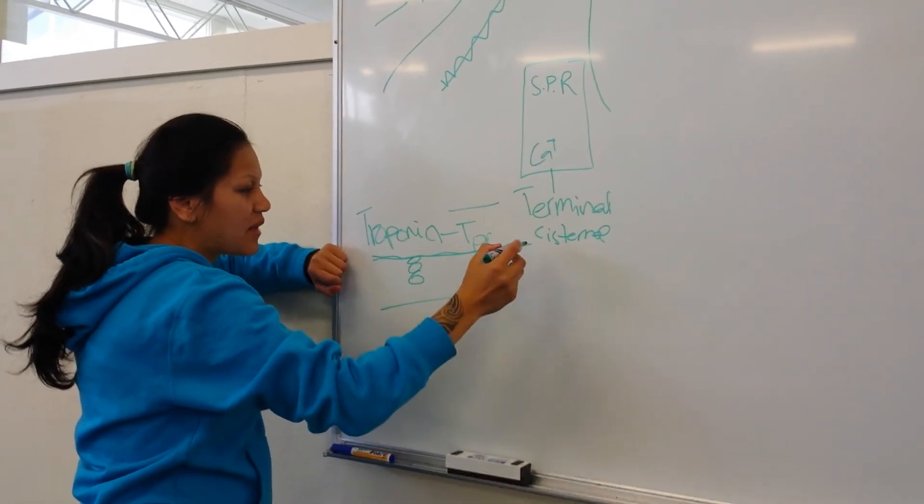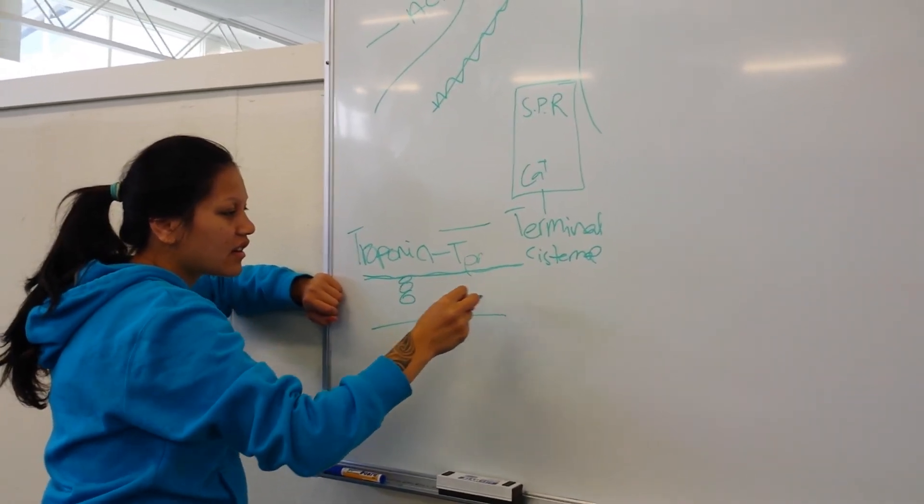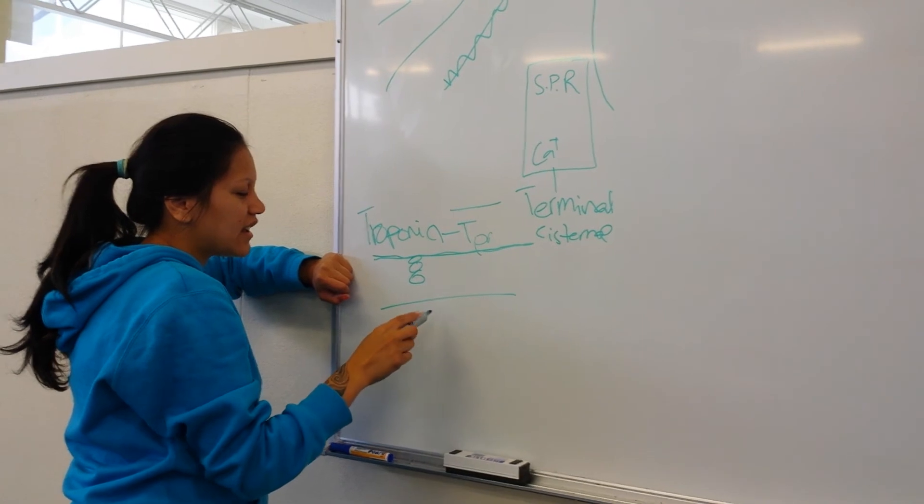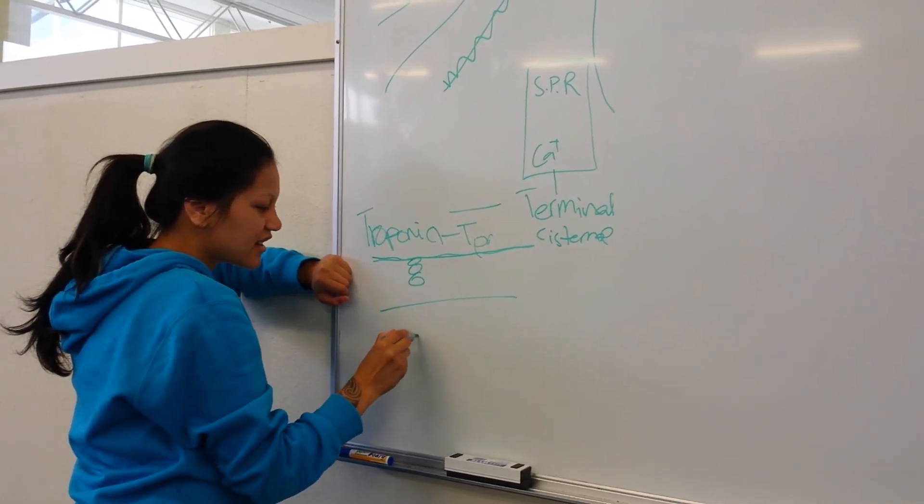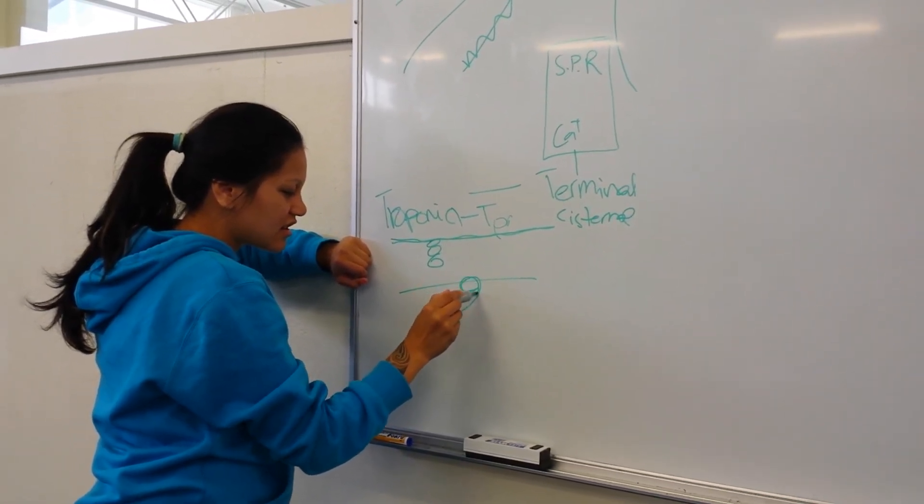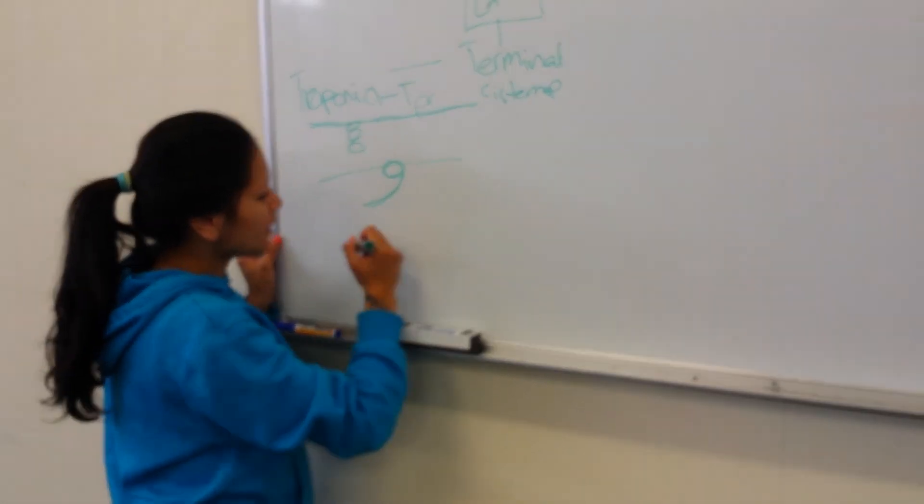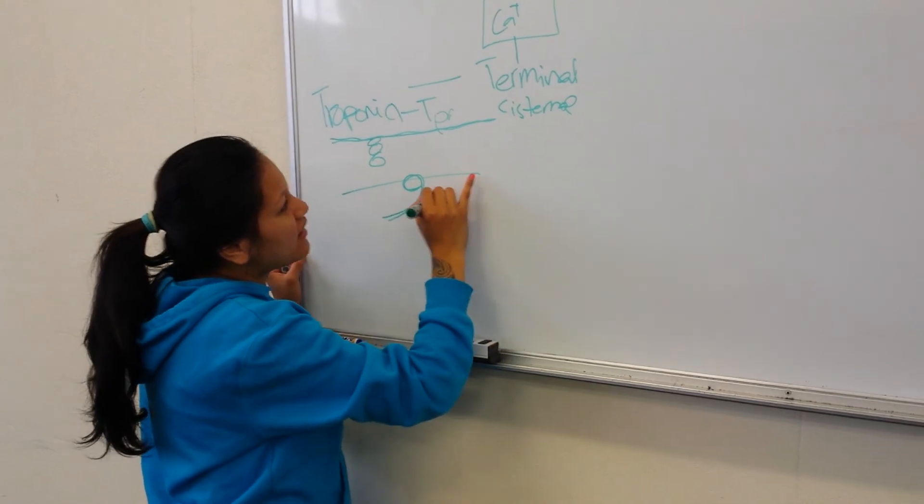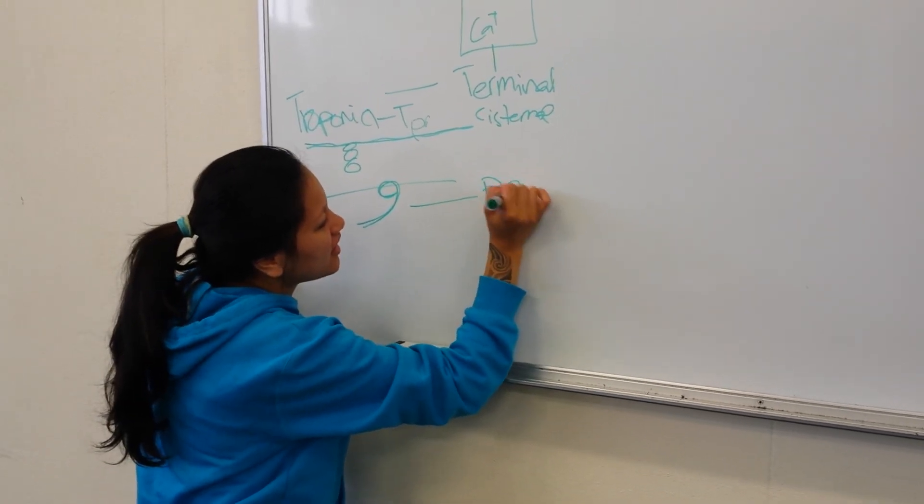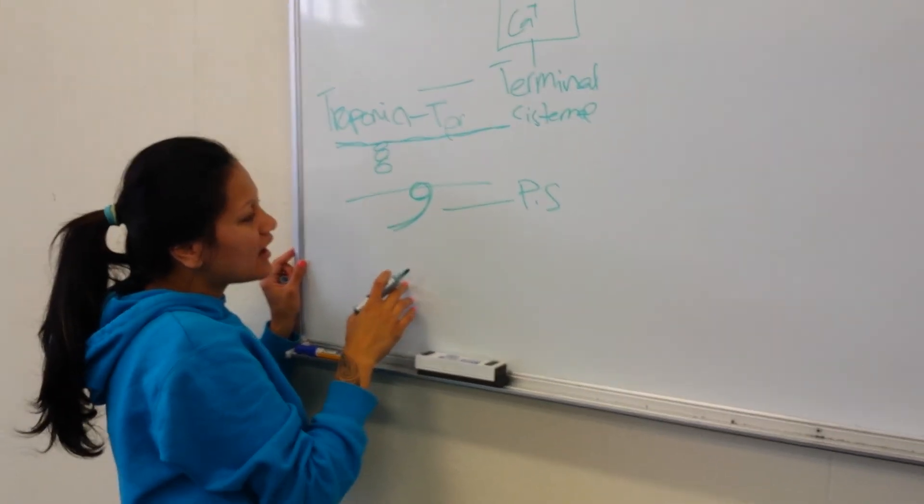The myosin heads attach to the binding sites of the actin, and then the power strike occurs.